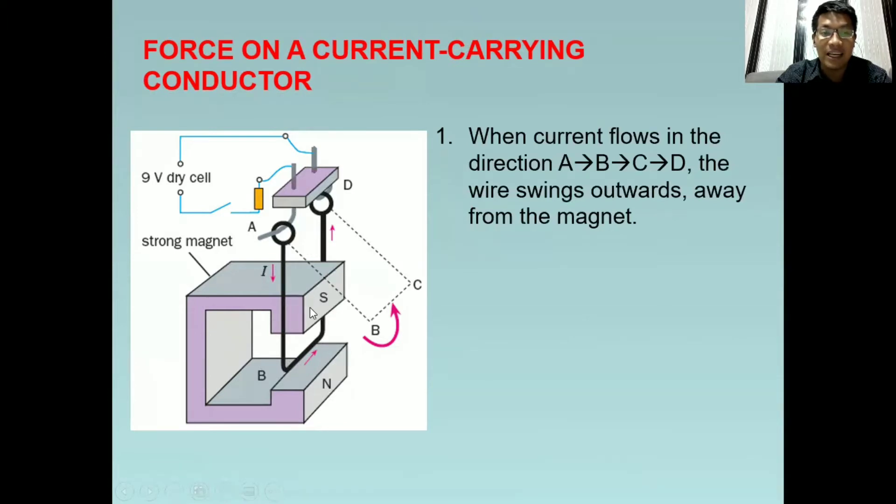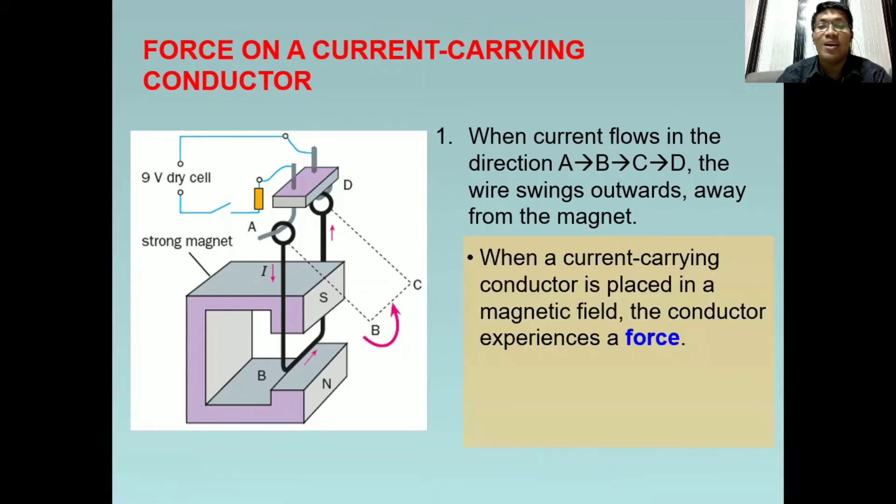This pink arrows represent the flow of current. Now, when the current flows in the direction of A, B, C, D, the wire swings outward or away from the magnet. Bakit gumalaw ang wire na ito palayo sa magnet? When the current carrying conductor is placed in a magnetic field, which is the magnet, the conductor experiences a force.